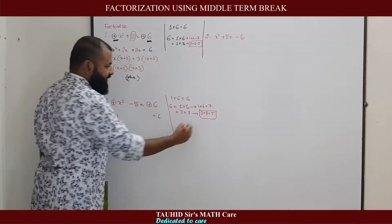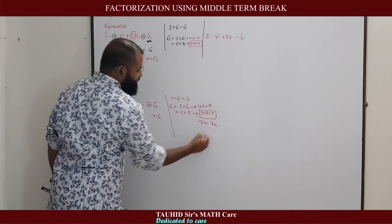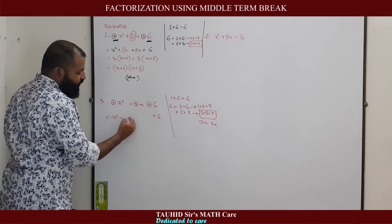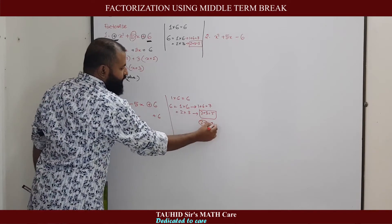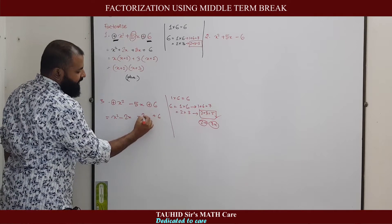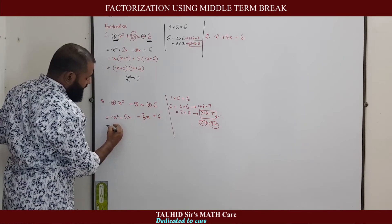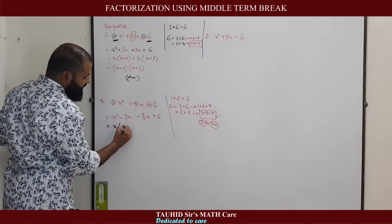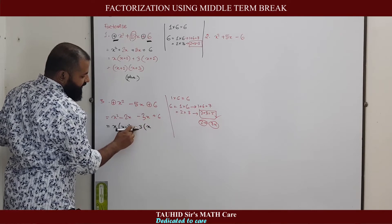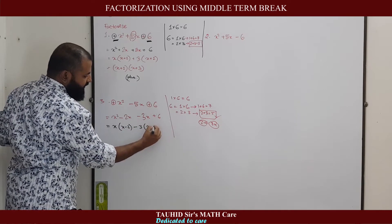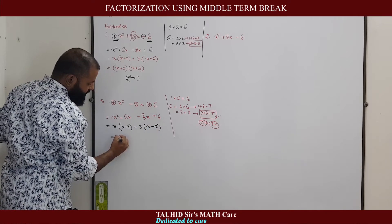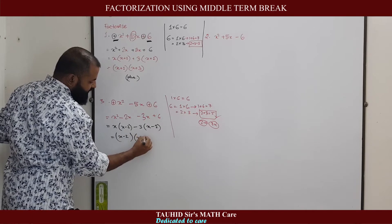For the middle term we break it as 2x and 3x, but here there is a minus sign, so we write two minus signs. We write −2x and −3x. Taking x common gives x(x − 2). Taking 3 common — since we factored out a minus, the sign reverses — gives −3(x − 2). So the answer is (x − 2)(x − 3).